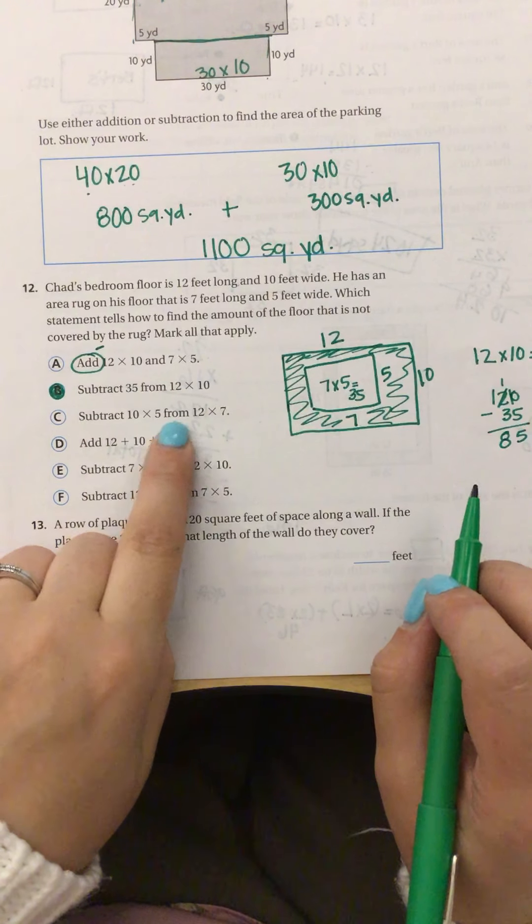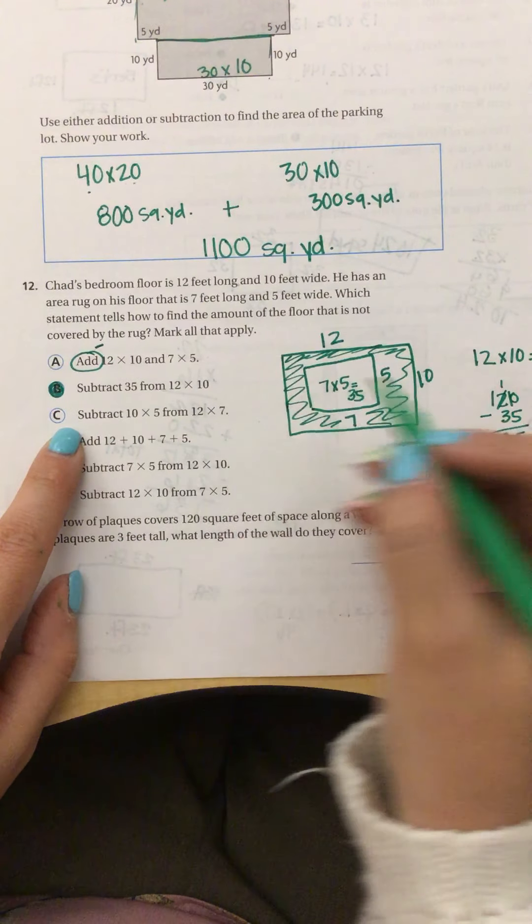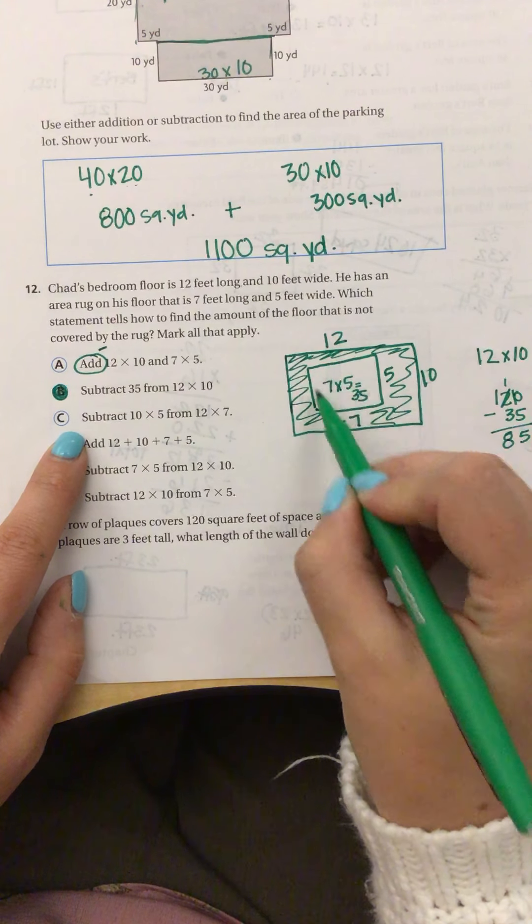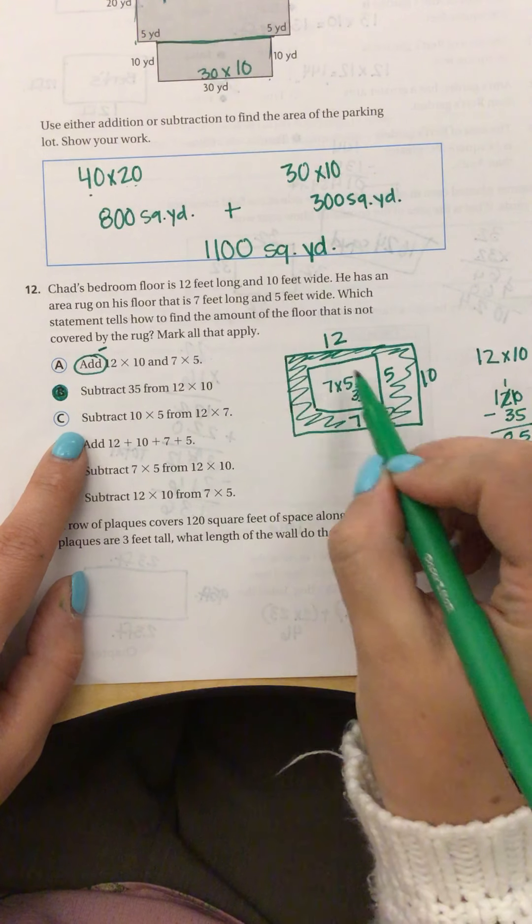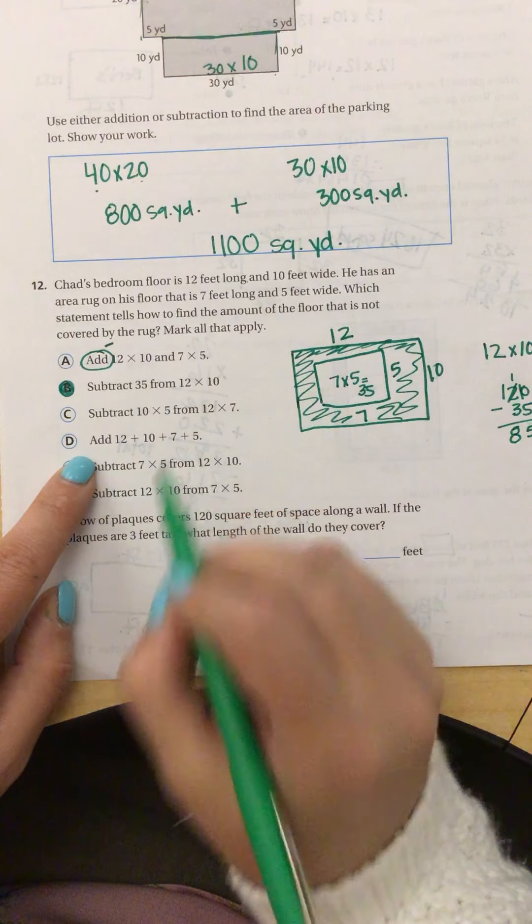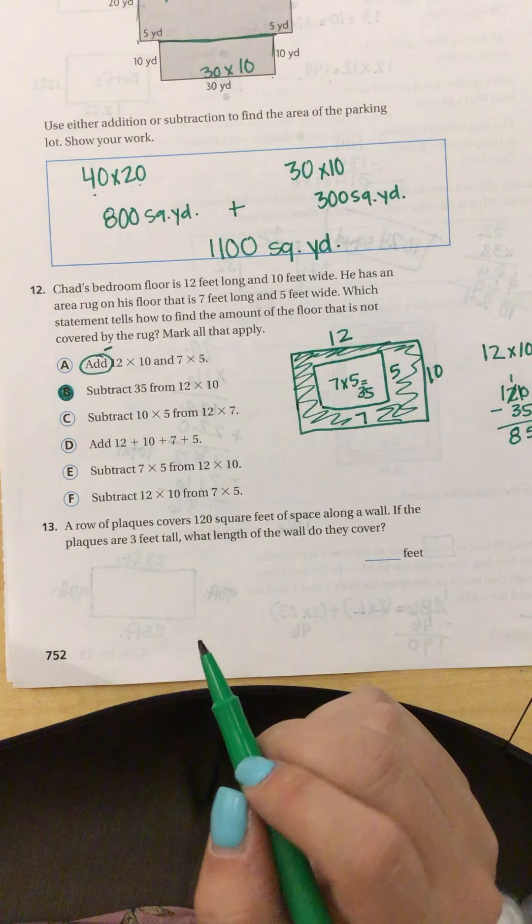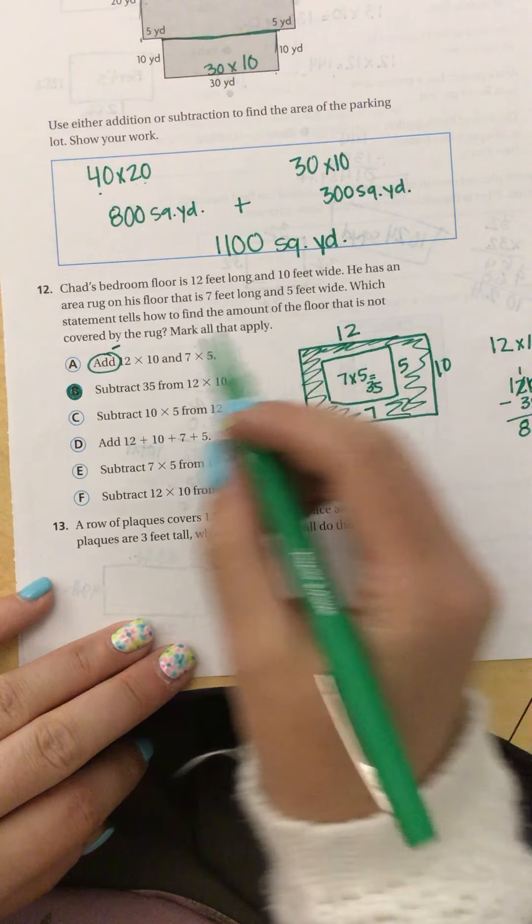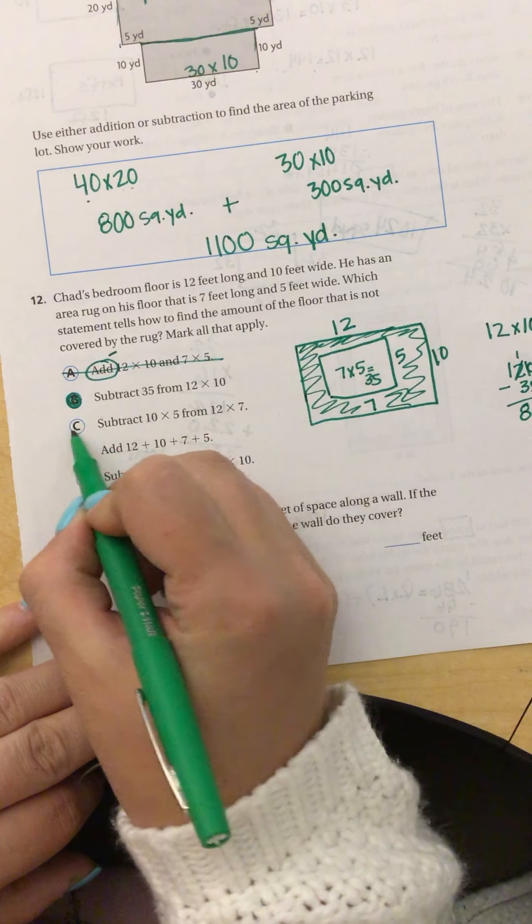C, 10 times 5 and 12 times 7. Well, that is wrong because the measurements are mixed up. 7 and 5 are the dimensions of the rug, and 12 and 10 are the dimensions of the floor. Adding all these together wouldn't get me anything. I would add if I was doing perimeter, but those are not the four sides of the rectangle. So we know that one is also wrong.